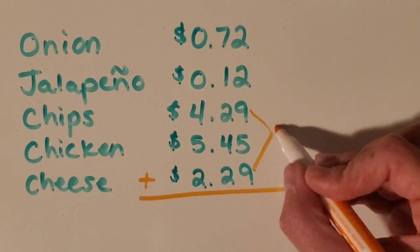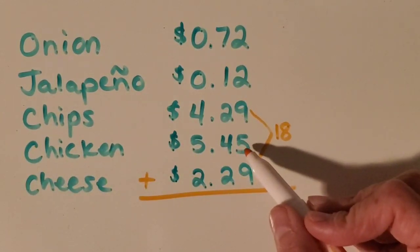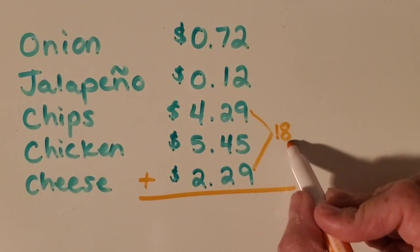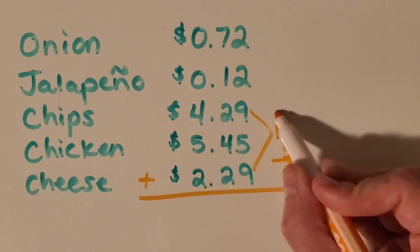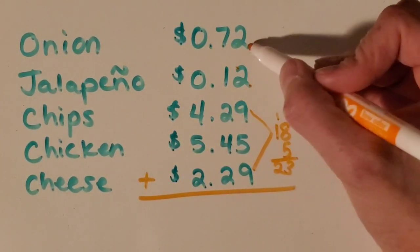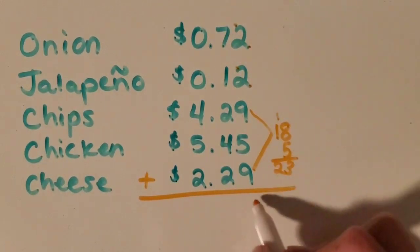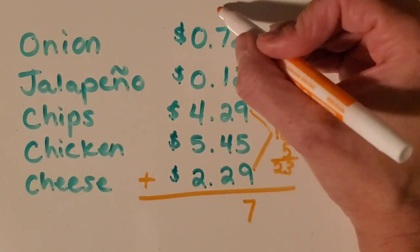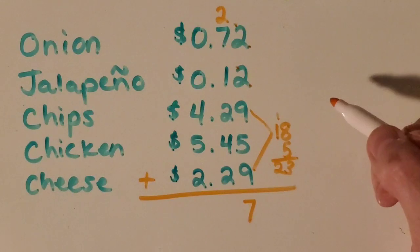So 9 plus 9 is 18. Then I can count 5 more, which is 23, 24, 25, 26, 27. So that was a little easier for me to add that way. And I show my regrouping.